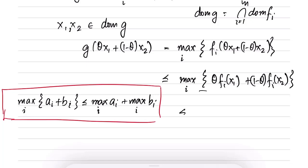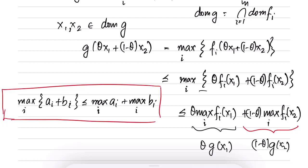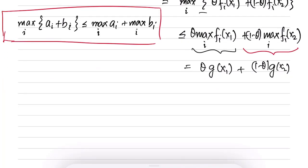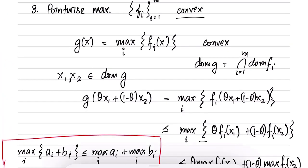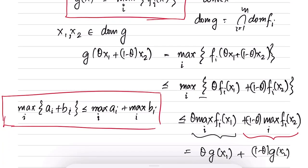This allows us to conclude that g(θx_1 + (1−θ)x_2) ≤ θ max_i f_i(x_1) + (1−θ) max_i f_i(x_2) = θ g(x_1) + (1−θ) g(x_2), which implies g is convex. So we have established that the pointwise maximum is a convex function. We used the zeroth order condition because g(x) may not be differentiable even if each f_i is differentiable.